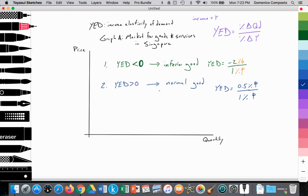Now, normal goods can be divided into two parts. If we get a value above zero, economists want to distinguish if it is less than one or greater than one. If YED is less than one but greater than zero, it's a normal good, but it's what we call a necessity.